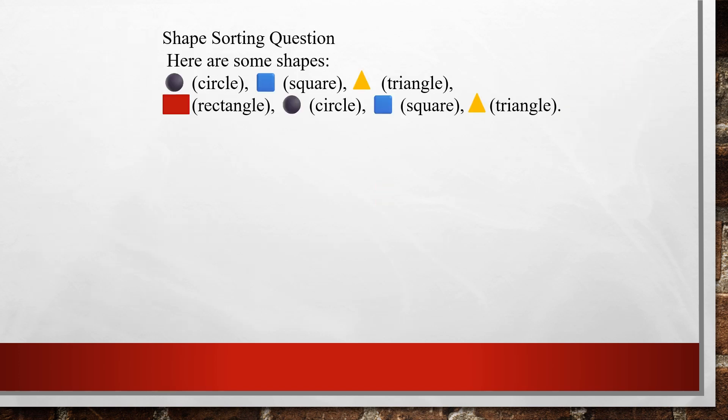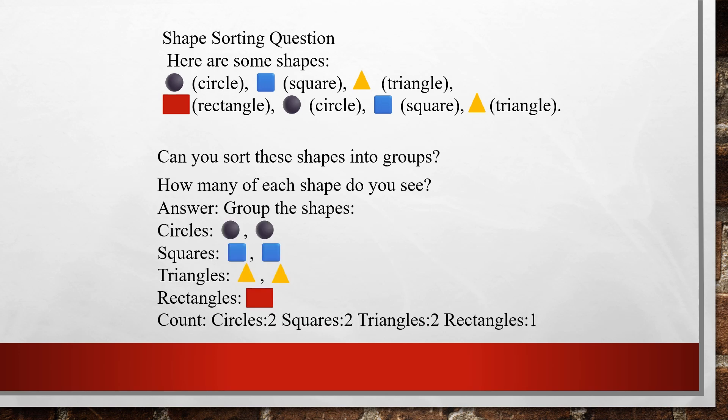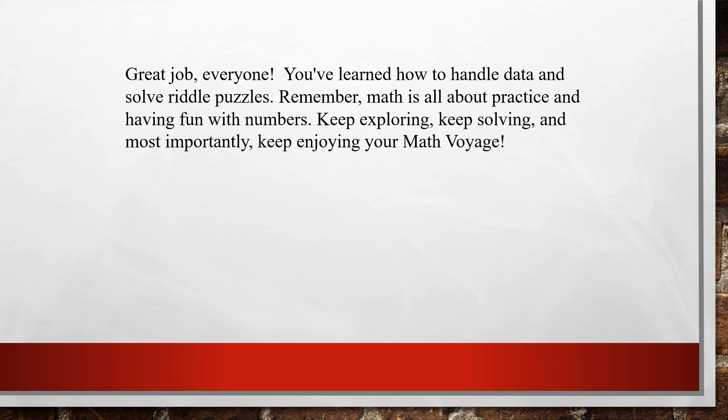Next is a shape sorting question. Here are some shapes: circle, square, triangle, and rectangle. Can you sort these shapes into groups and count how many of each shape you see? The answer is: circles — 2, squares — 2, triangles — 2, rectangles — 1. Write the count the way it is shown here.